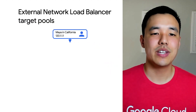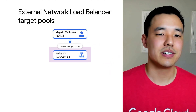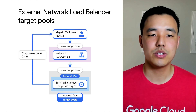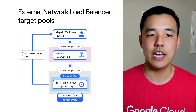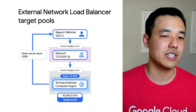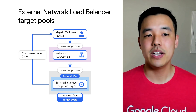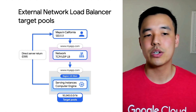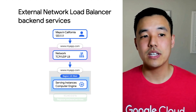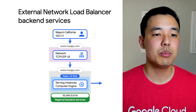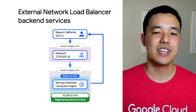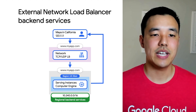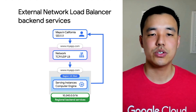First stop is our external network load balancer. The network load balancer is a regional pass-through load balancer that distributes TCP and UDP traffic among virtual machines in the same region. As you might know, the network load balancer leverages target pools or target instances. With the recent launch, we've enabled the use of regional back-end services. Similar to target pools, a back-end service defines how cloud load balancing distributes traffic.